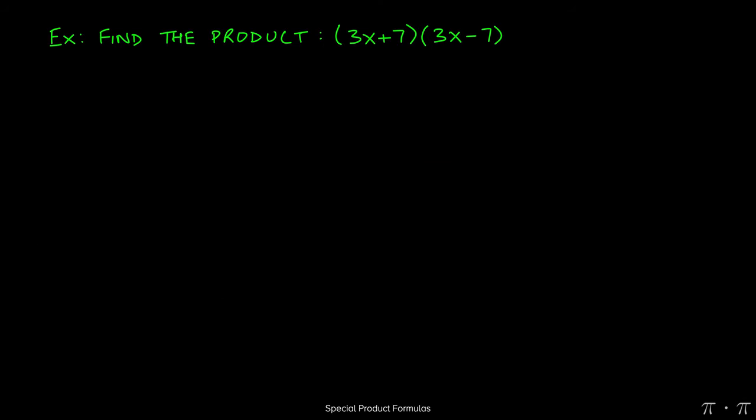Let's say we're asked to find the product of the two quantities 3x plus 7 and 3x minus 7. We begin by recognizing that we have a sum and a difference, which in fact is equal to the difference of squares.